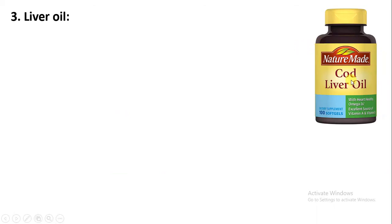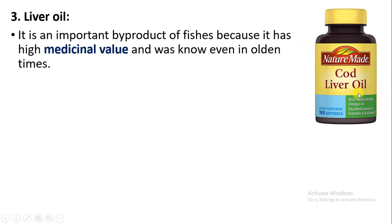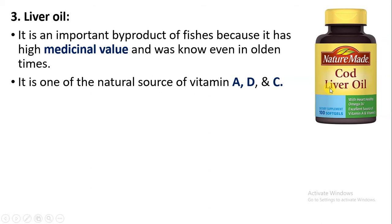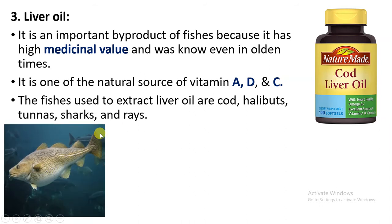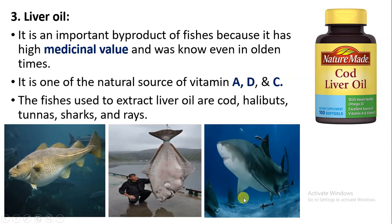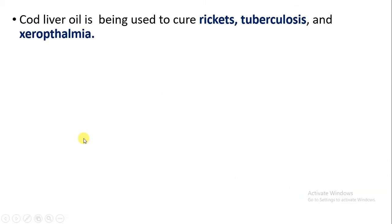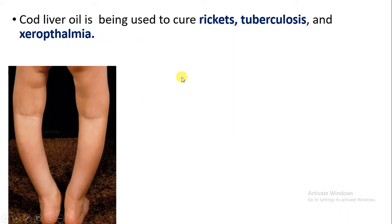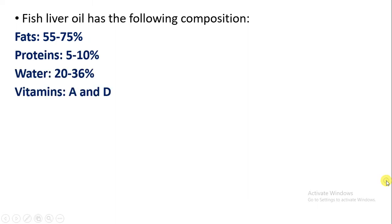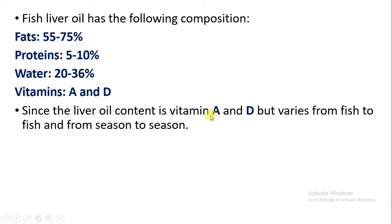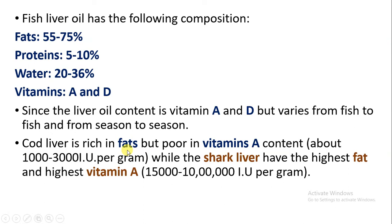Fish liver also produces oil, and fish liver oil has had medicinal value since olden times. This liver oil has high amounts of vitamin A, D, and C, which are natural sources of vitamins. Liver oil is obtained from cod fish, halibut, tunas, sharks, and rays. Cod liver oil has medicinal value because it can cure diseases like rickets, tuberculosis, and xerophthalmia. Fish liver oil has a composition of fats, proteins, water, and vitamins A and D, which vary from fish to fish and season to season.